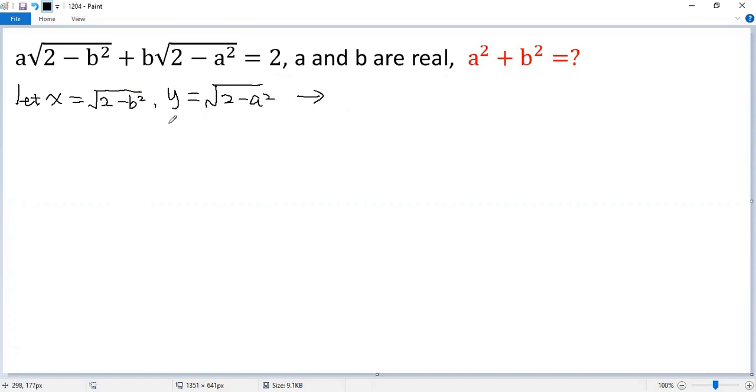Then we square both sides. So we get x squared equals 2 minus b squared. Similarly, y squared equals 2 minus a squared. We denote as equation 1 and equation 2.